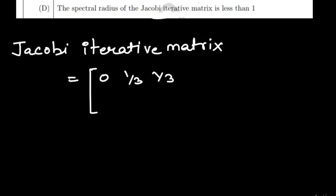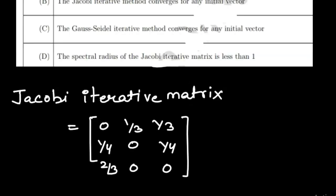Similarly, the second row diagonal element is 4, so we have 1/4, 0, and 1/4. For the third row, the diagonal element is 3, so we have 2/3, 0, and 0.